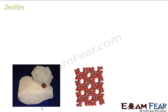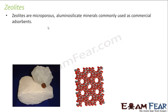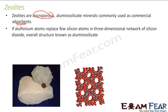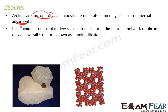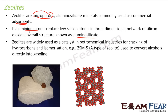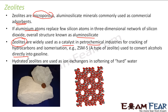Zeolites are a type of silicate. They are microporous and are normally used as adsorbents and for filtering. We discussed in the last chapter how zeolites are used for softening of hard water. If aluminum replaces some silicon atoms, the overall structure is called aluminosilicate. Zeolites are also used as catalysts in the petrochemical industry, to convert alcohols to gasoline, and as ion exchangers for softening hard water.